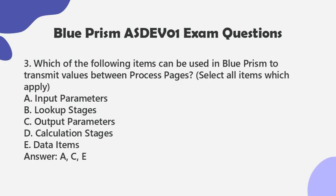Question 3: Which of the following items can be used in Blue Prism to transmit values between process pages? Select all items which apply. a. Input parameters. b. Lookup stages. c. Output parameters.